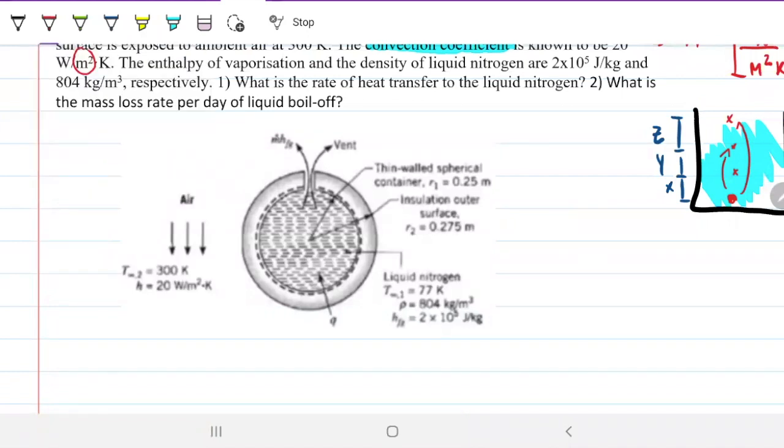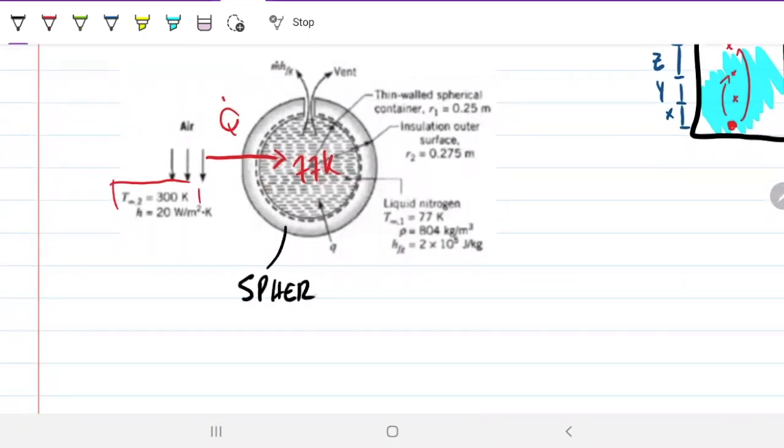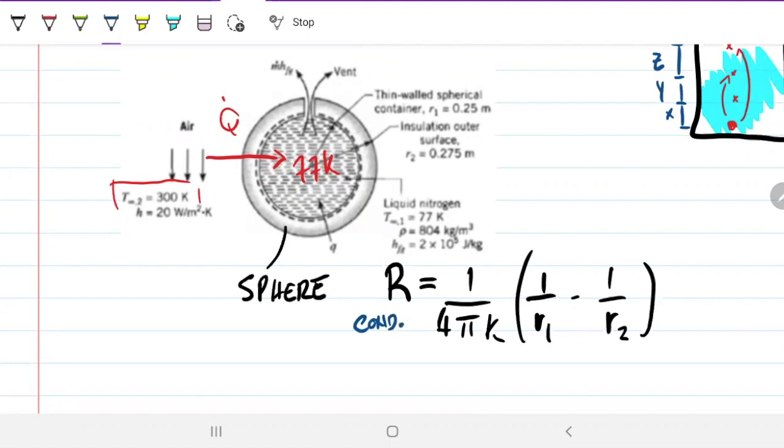What do we have? We have T infinity is 300. Inside, we have nitrogen and it's 77 kelvin. So that means that we have q going from the outside to the inside. Now, there's two things that are different in this problem from what we did so far. The first thing is that this is a sphere, and being a sphere, the convective resistance, just like it changes the cylinder, it will change the sphere. And it will be 1 over 4 pi - you can see this force coming from the area, 4 pi r squared. 4 pi k times 1 over r1 minus 1 over r2. That's the resistance due to conduction on a sphere.